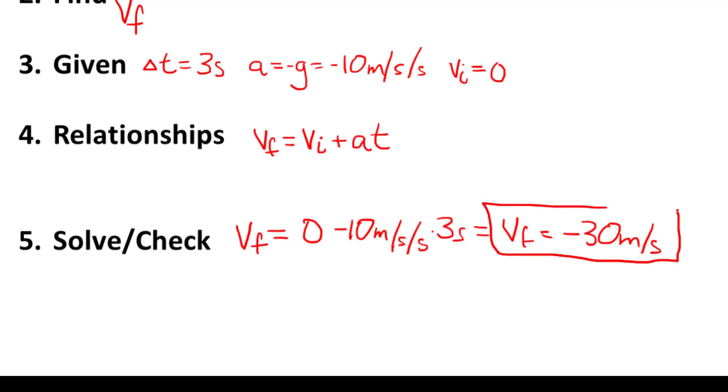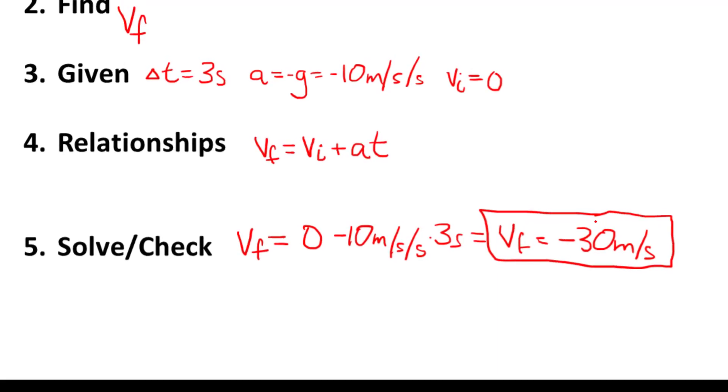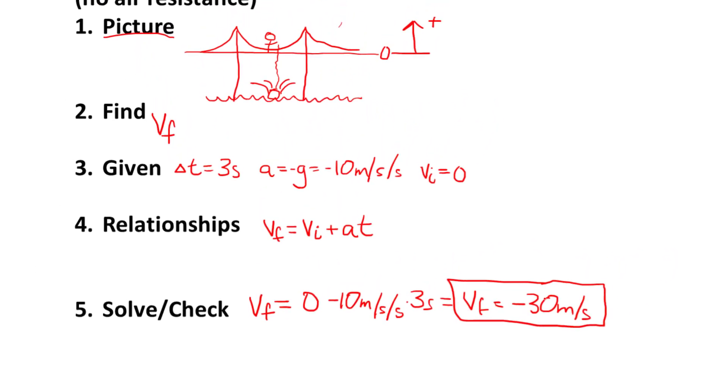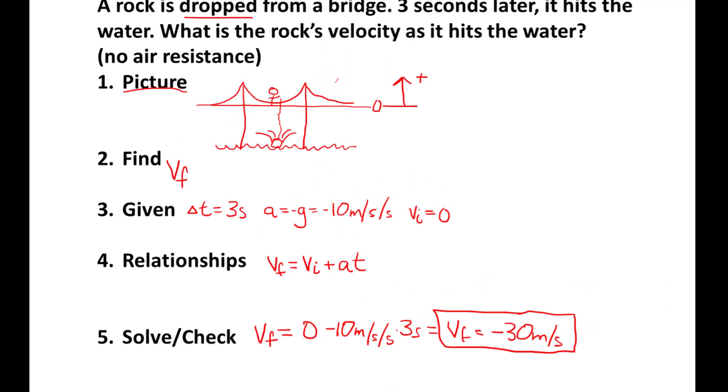Does it make sense? Well, it's falling down, so that negative sign certainly makes sense. 30 meters per second is about 50 to 60 miles an hour. Something is falling, it would certainly be more than a walking pace, but it wouldn't be hundreds of miles an hour. So this is a reasonable answer. Let's take a look at another example now.